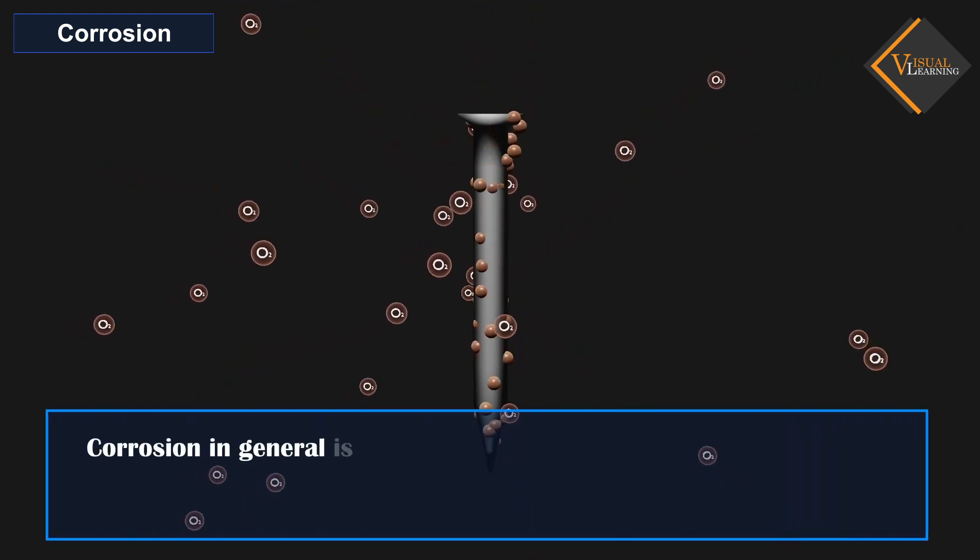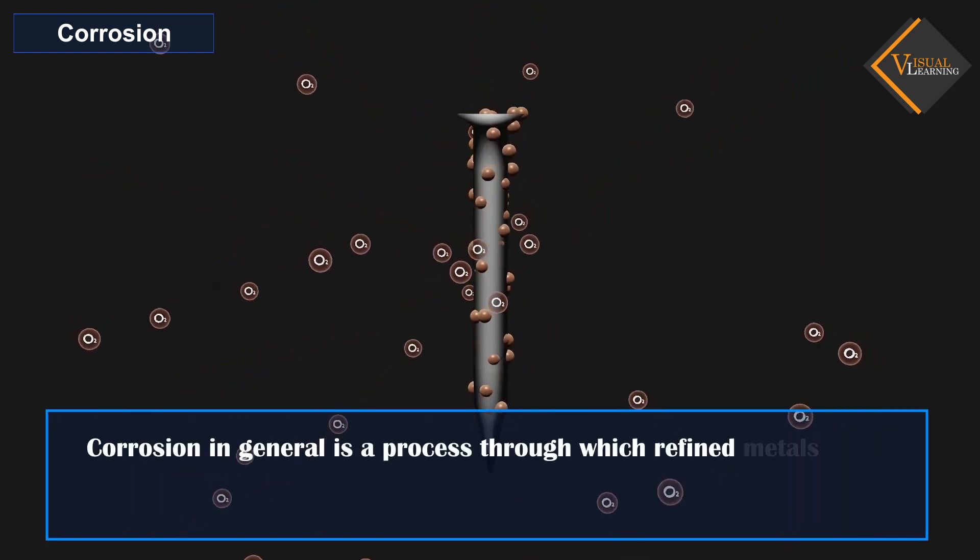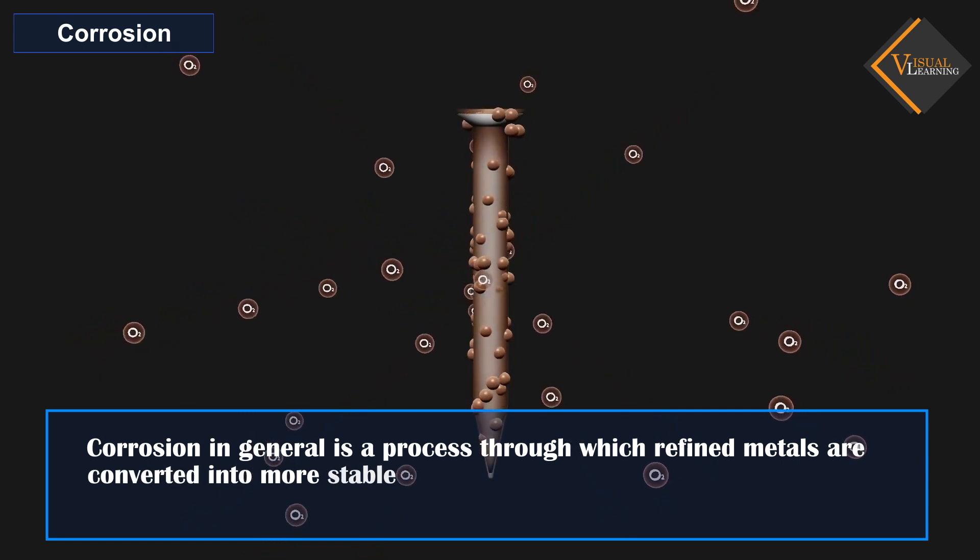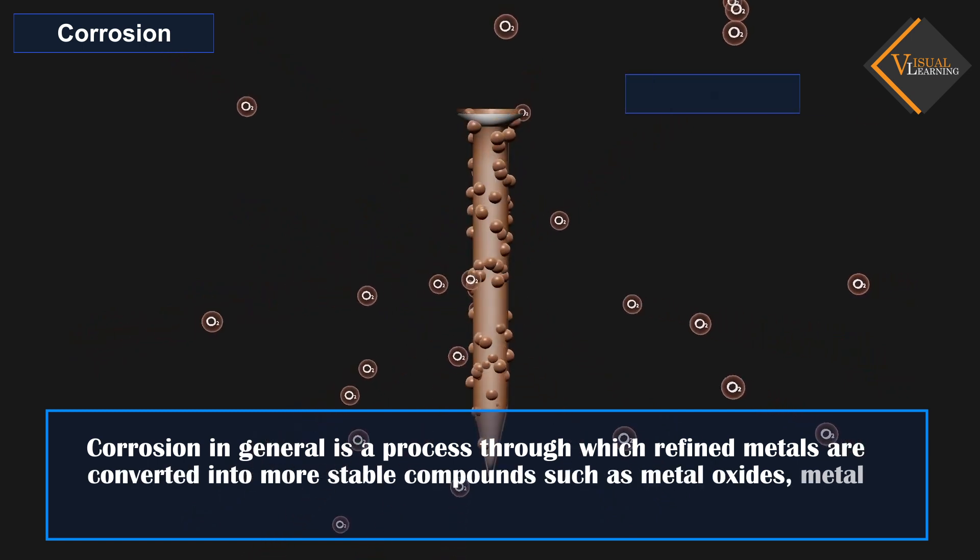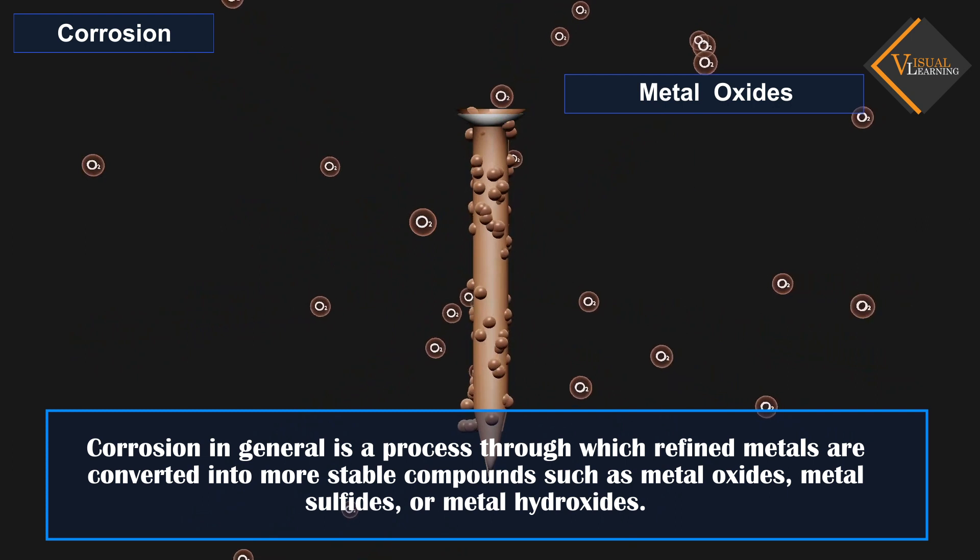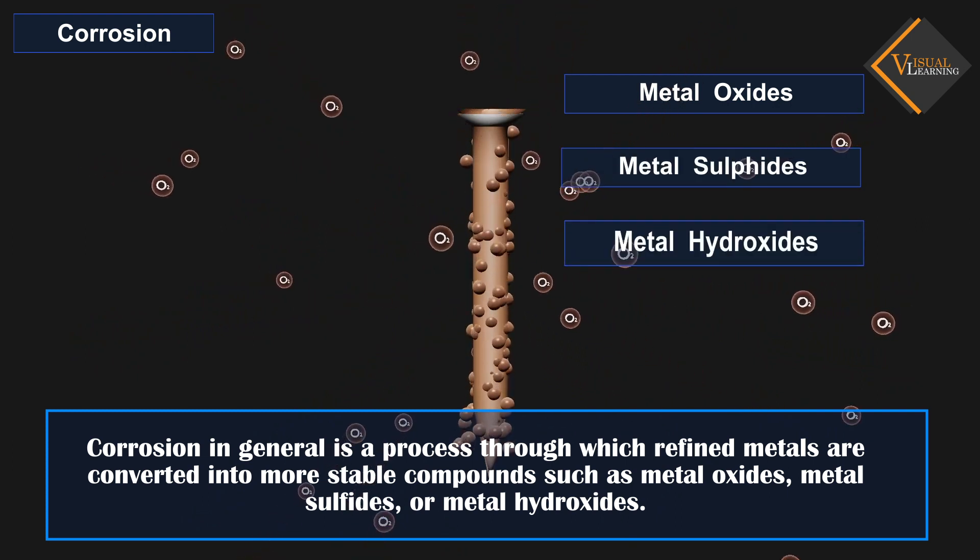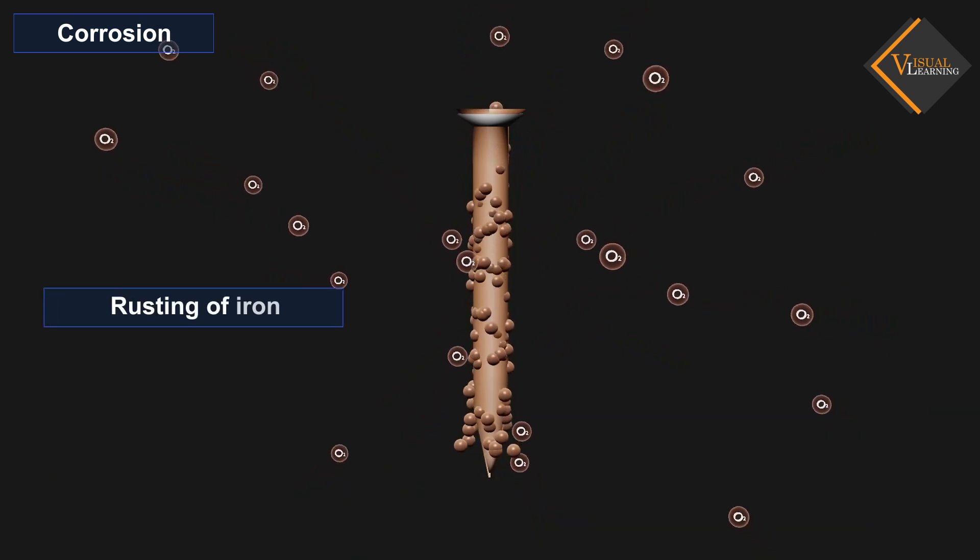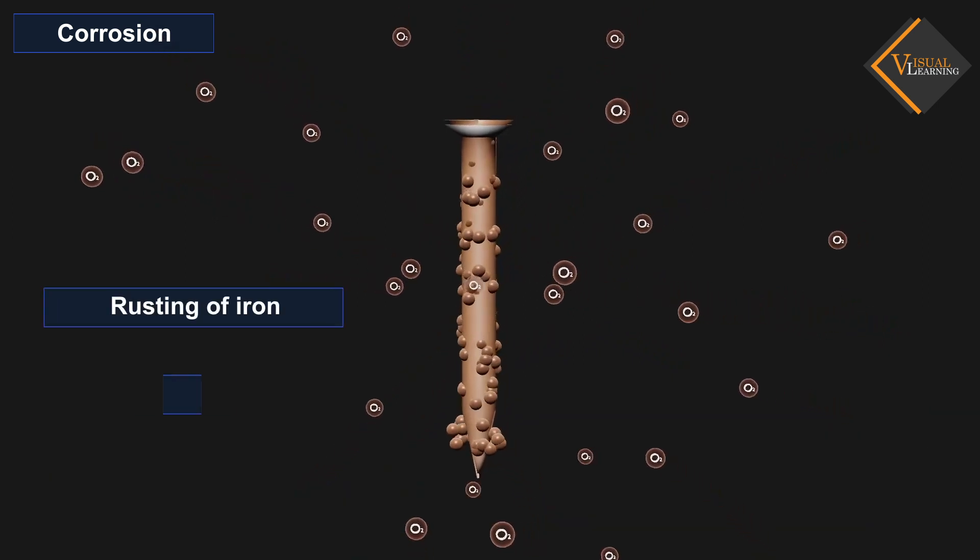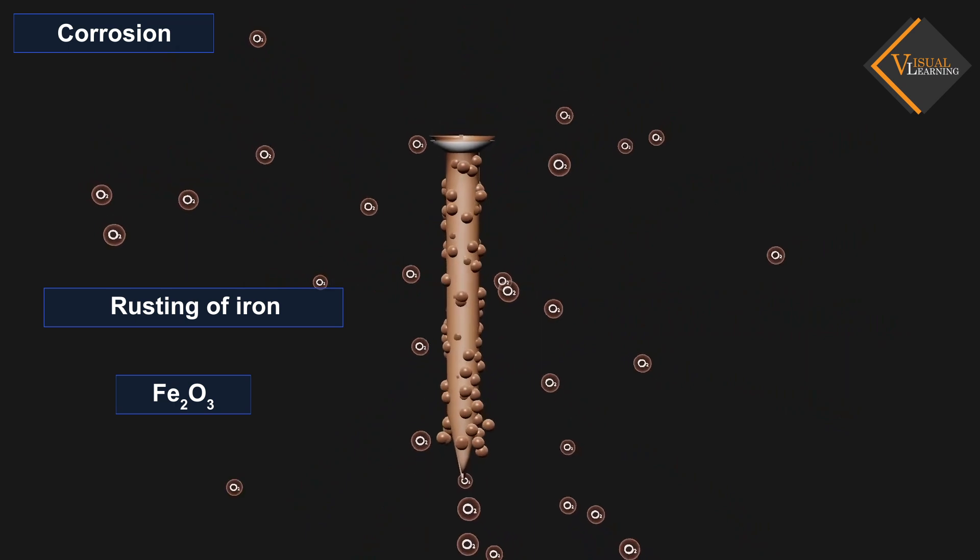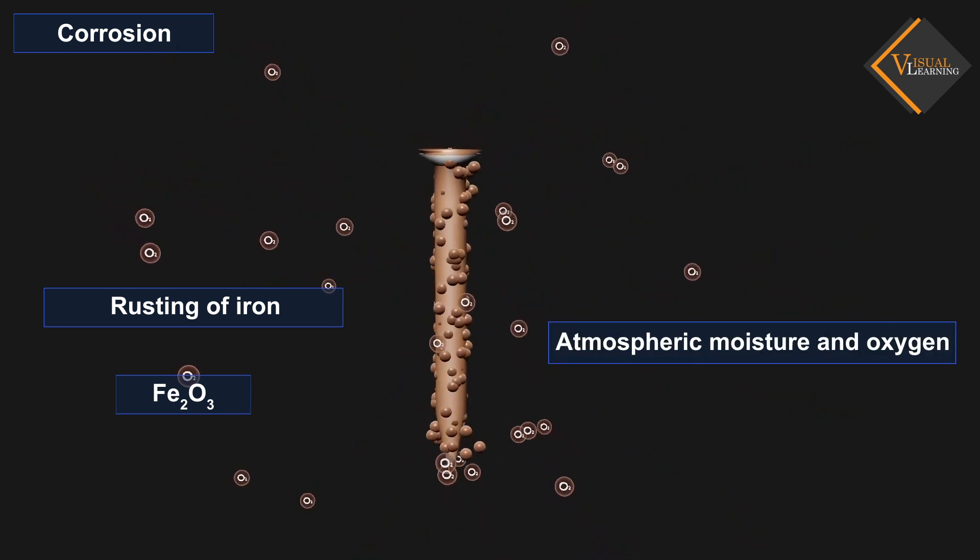Corrosion, in general, is a process through which refined metals are converted into more stable compounds such as metal oxides, metal sulfides, or metal hydroxides. Likewise, the rusting of iron involves the formation of iron oxides via the action of atmospheric moisture and oxygen.